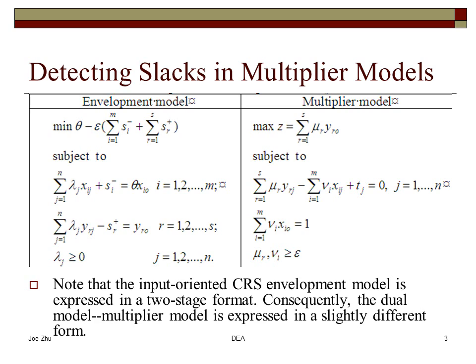Now, originally, because you have a condition that says the mu and v are greater than or equal to zero, so when you solve the multiplier model, if you look at your results, you will notice that sometimes you see zeros on some of the inputs and outputs. And that may cause an issue that in the envelopment model, you will have slacks.